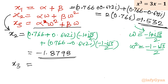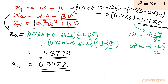For x₃ = αω² + βω, substituting the values of α, ω², β, and ω, we get x₃ ≈ 0.3472. You can compare all three results from both methods — they match. I hope you like this video. Thank you so much for watching. Don't forget to like, share, and subscribe.